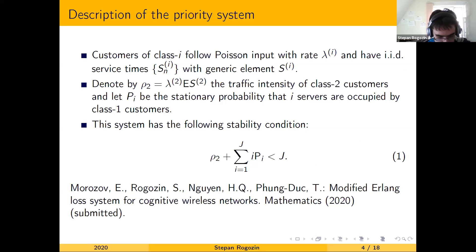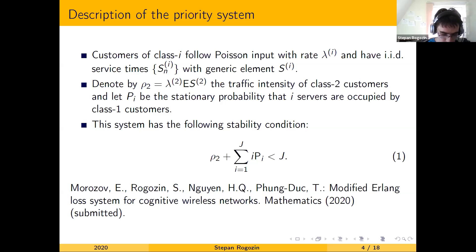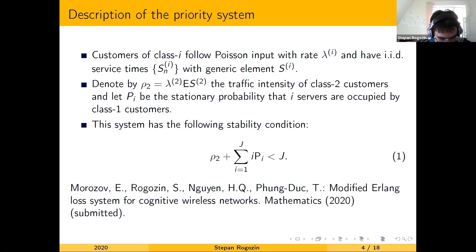We assume that customers of class i follow Poisson input with rate lambda i and have independent identically distributed service times a_i. We denote by rho two the traffic intensity of class two customers, and let pi_i be the stationary probability that i servers are occupied by class one customers. Such a modified RLanClose system is studied in this paper, in which the following stability condition of the system is obtained, where this sum is actually the expectation of the number of class one customers in the system.